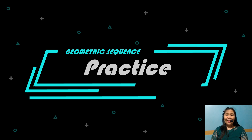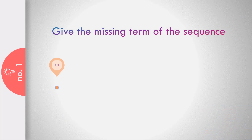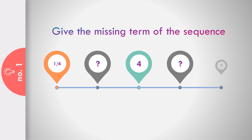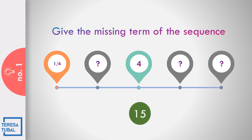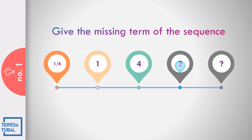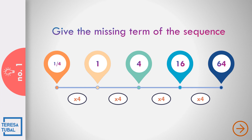Let us practice what you have learned. Give the missing term of the sequence. The first term is 1 fourth and the third term is equal to 4. I give you 15 seconds. The answer is equal to 1, 16, and 64, because the common ratio is equal to 4. 1 fourth times 4 is 1. 1 times 4 is 4. 4 times 4 is 16. 16 times 4 is equal to 64.